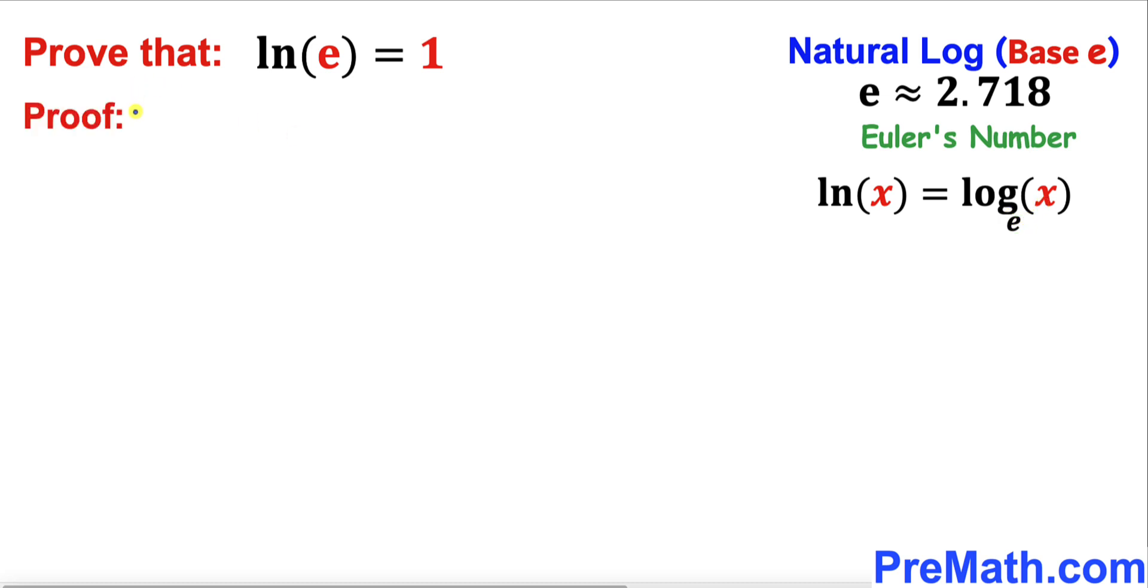Now let's get started with our proof. Let's focus on the left hand side of this equation and apply this fact. So the left hand side could be written as log of e with the base e, and the right side is 1.